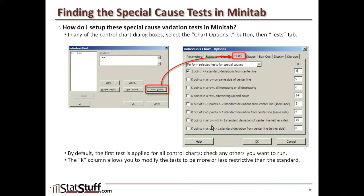For example, looking at the last test — eight consecutive data points falling outside of Zone C — the default is eight. If you check that box, you can change it from eight to whatever number you want, such as 12 or 16 data points. This gives you the option of customizing the test to run in any way you want.